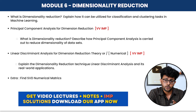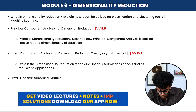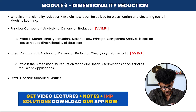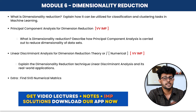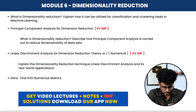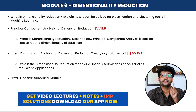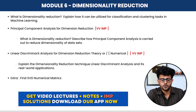Module 6 has two very important topics: PCA and LDA. Key questions include: what is dimensionality reduction and how can it be utilized for classification and clustering tasks in machine learning? Also: explain principal component analysis for dimensionality reduction — describe how PCA is carried out to reduce the dimensionality of datasets. For LDA: explain linear discriminant analysis as a dimensionality reduction technique and its real-world applications. Full solutions for these are available in the bundle pack.